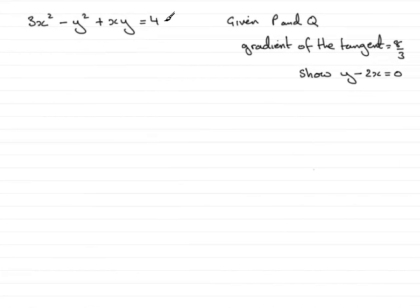In this question, we're given the implicit equation of a curve, 3x squared minus y squared plus xy equals 4. And we're given that on this curve there's a couple of points, p and q, and the gradient of the tangent at these points is 8 thirds. And we've got to show that y minus 2x equals 0.